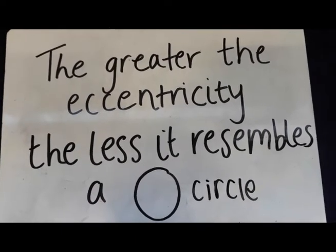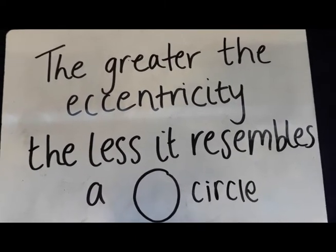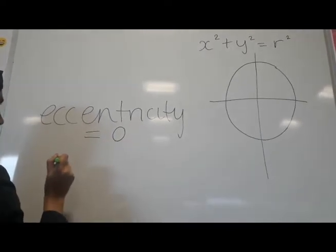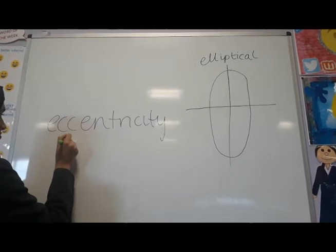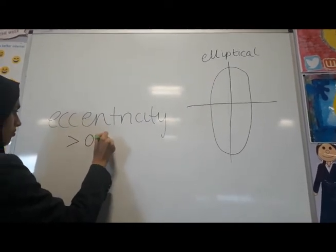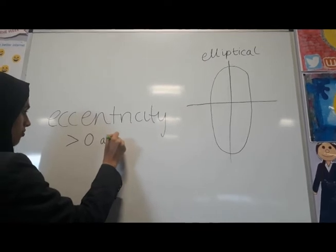Therefore, the greater the eccentricity, the less the orbit resembles a circle. An eccentricity of zero is a circle. An eccentricity greater than zero but less than one indicates an ellipse.